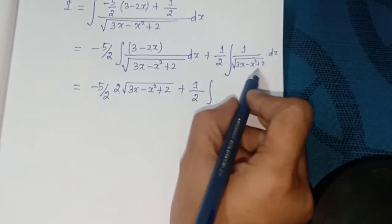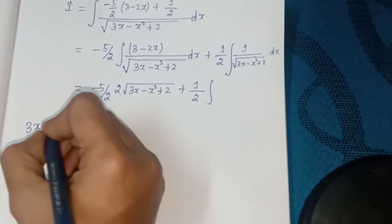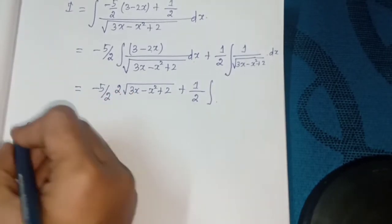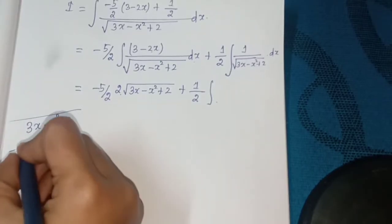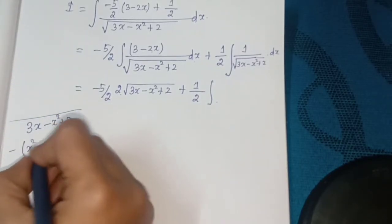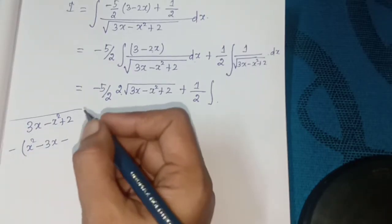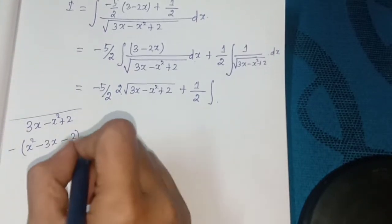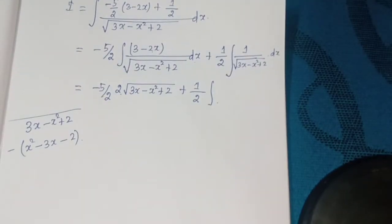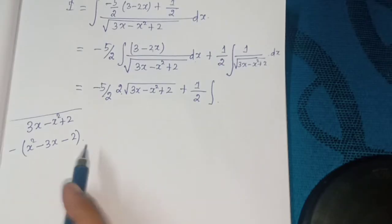For the second integral, we complete the square in the denominator. We have 3x - x² + 2 = -(x² - 3x) + 2 = -(x² - 3x + 9/4) + 9/4 + 2.